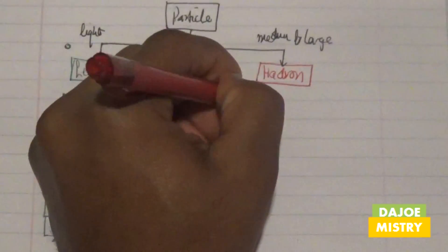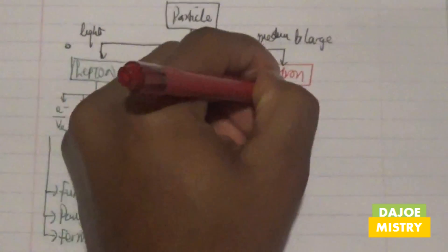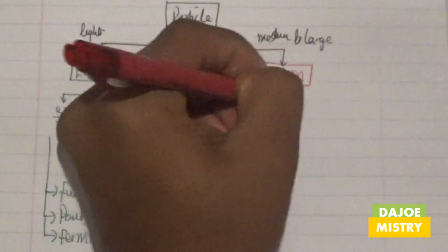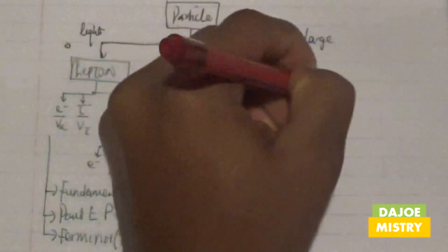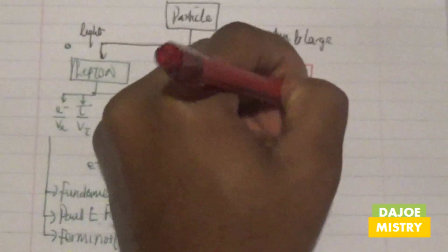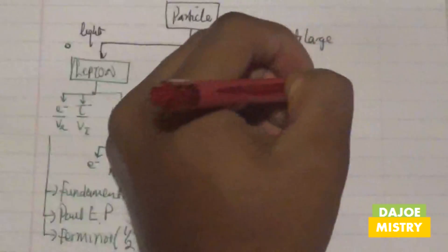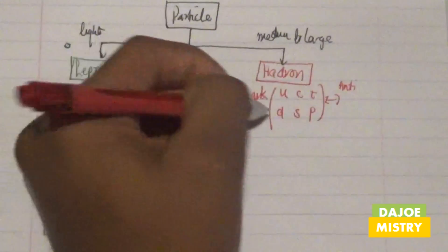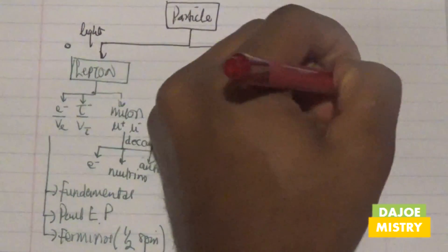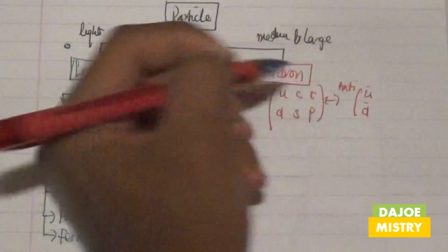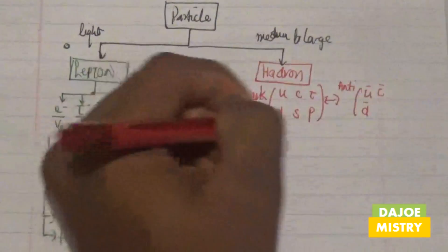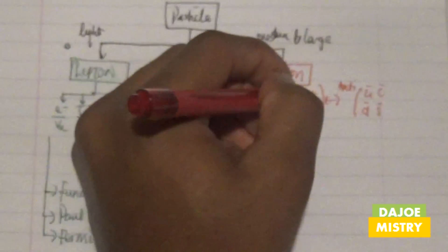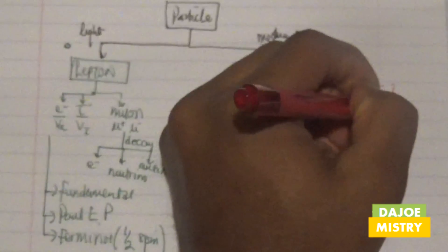Looking at quarks, quarks can be categorized as either the up or down state, we can have charm or strangeness, and on the other side we have top and bottom. For each quark, we also have its corresponding antiquark — for example, up bar versus down bar, charm bar versus strange bar, and top bar versus bottom bar.